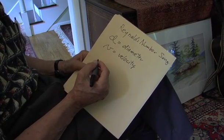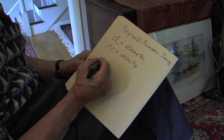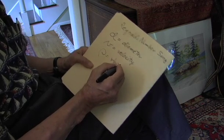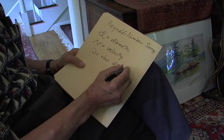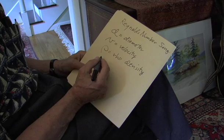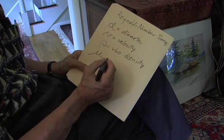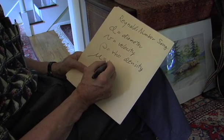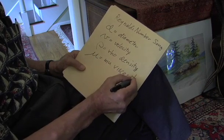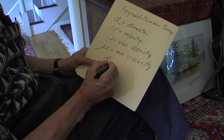Then we need some properties of the fluid. One of the properties is the density, but since we've already used D, we're going to use a Greek symbol which is rho. The other property of the fluid is the viscosity, and we use the Greek symbol mu, because we've already used V. So this is mu, and it stands for the viscosity of the fluid.